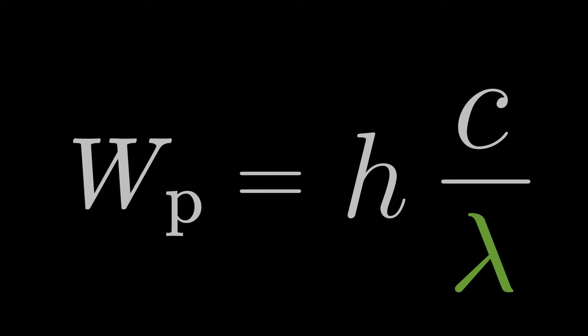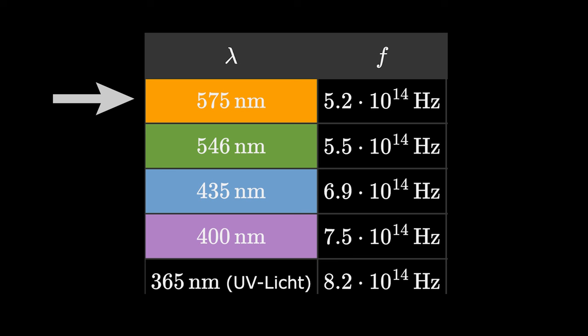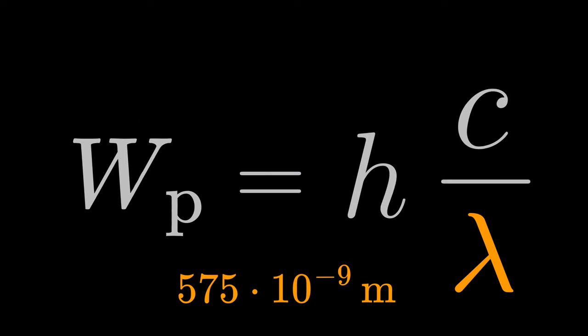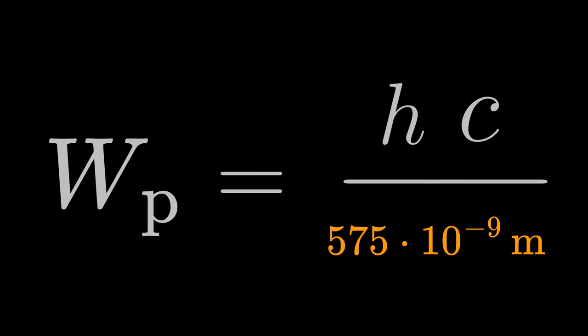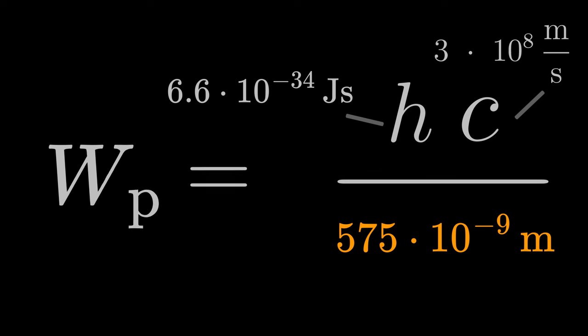Let's do a quick example of how to calculate the photon energy. We want to calculate the energy of a photon of yellow light. To do this, we insert 575 times 10 to the power of minus 9 meters into the Planck formula. If we also insert the value of Planck's constant and the speed of light, we get a photon energy of 3.4 times 10 to the power of minus 19 joules.